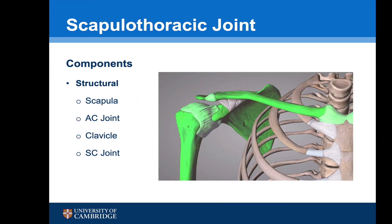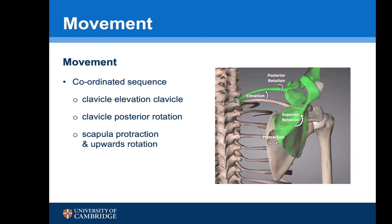The components of the scapulothoracic joint are the scapula and its connection to the sternum through the AC joint, clavicle, and sternoclavicular joint. Movement of the joint is obtained by a coordinated sequence of clavicle elevation and posterior rotation with scapular protraction and upwards rotation.